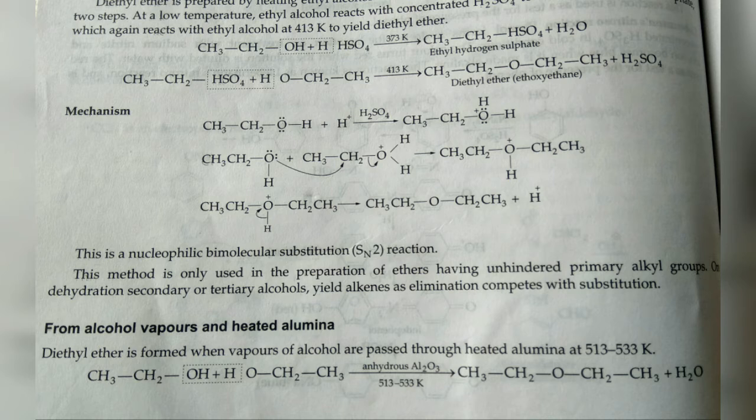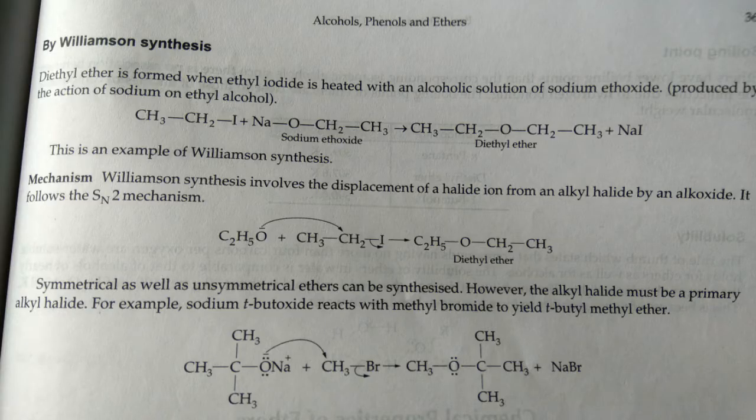The ether produced is symmetrical — the same group is on both sides of the oxygen. But if it is asked in the exam how to prepare unsymmetrical ether, for that we have a special reaction called Williamson synthesis. Williamson synthesis allows you to prepare both symmetrical and unsymmetrical ethers.